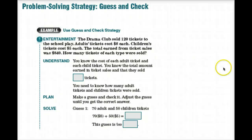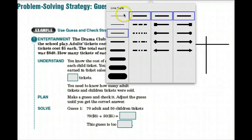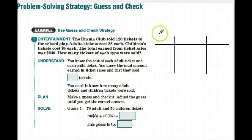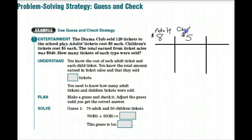We're going to make a chart in your margin on your notebook, or wherever you have the most room. Your chart should have three columns. In the first column we're going to put adult tickets at $8. The second column will represent children's tickets at $5. And the third column is our total, which we want to be $840.